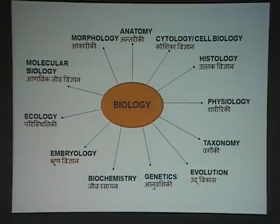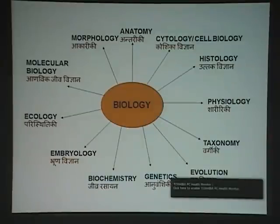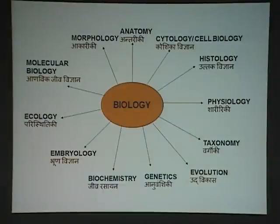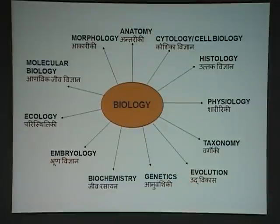Then Chordata — presence of notochord. Is notochord present in us? It is present during the developmental stage, and later on it differentiates into the vertebral column. Therefore we are Vertebrata. Because there are some animals in phylum Chordata in which the notochord is intact — it is not differentiated into a vertebral column. You might have heard: Salpa, Doliolum, Amphioxus. In these chordates, there is notochord, but it is not differentiated.